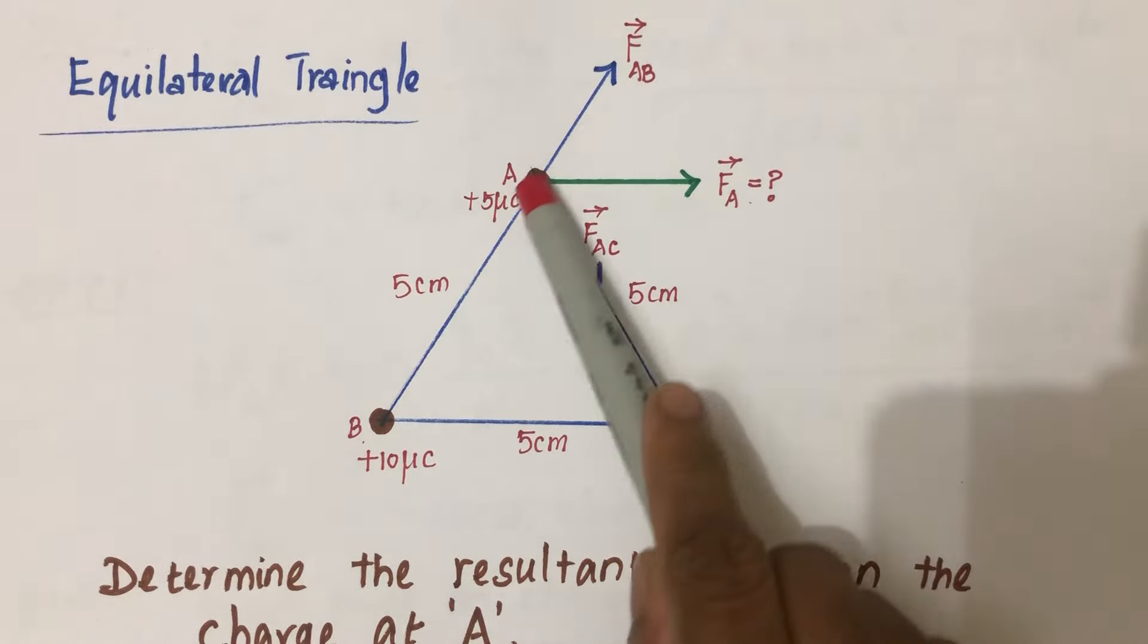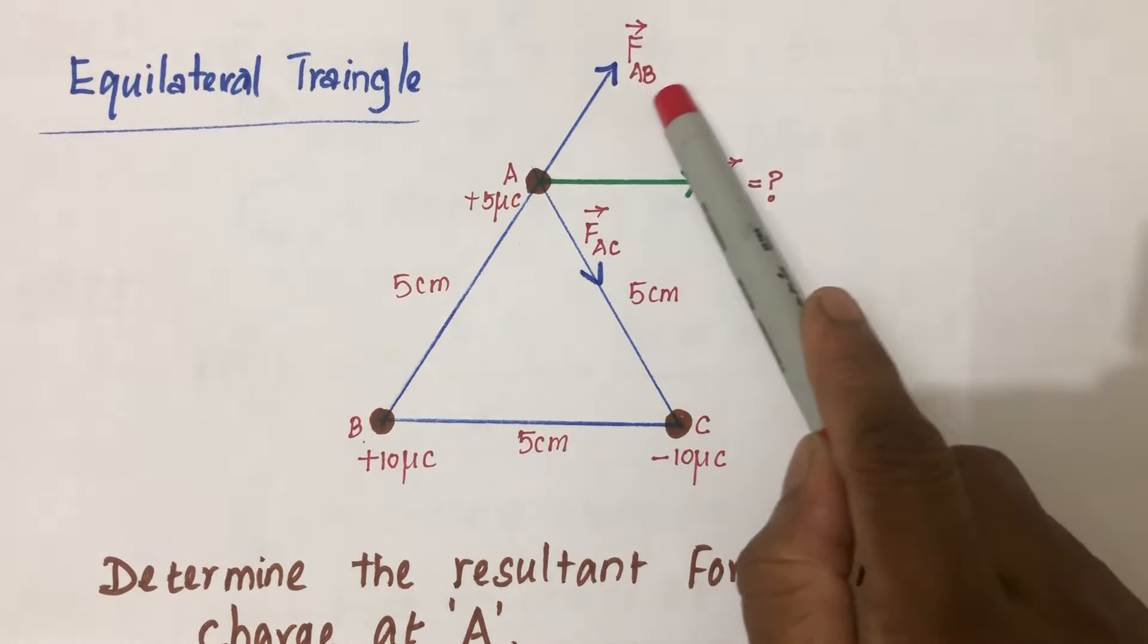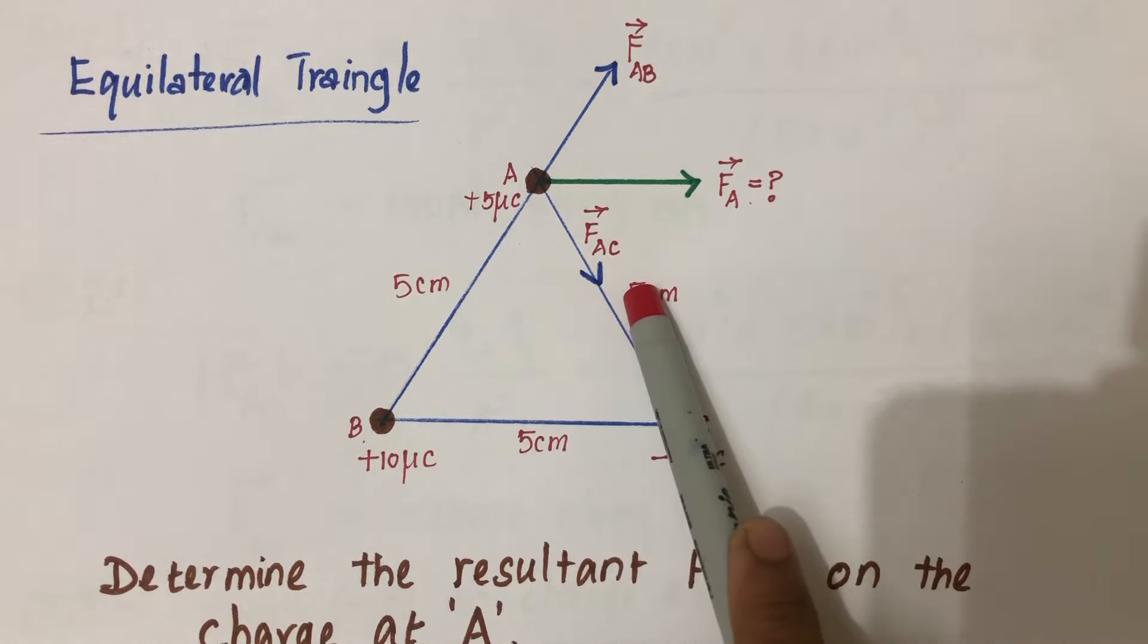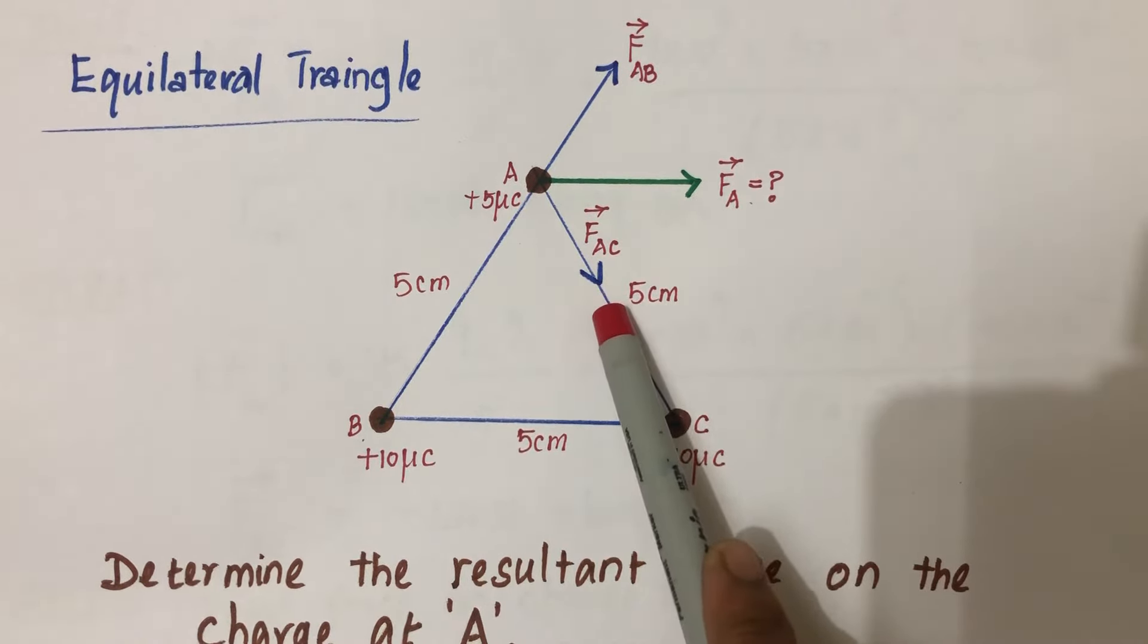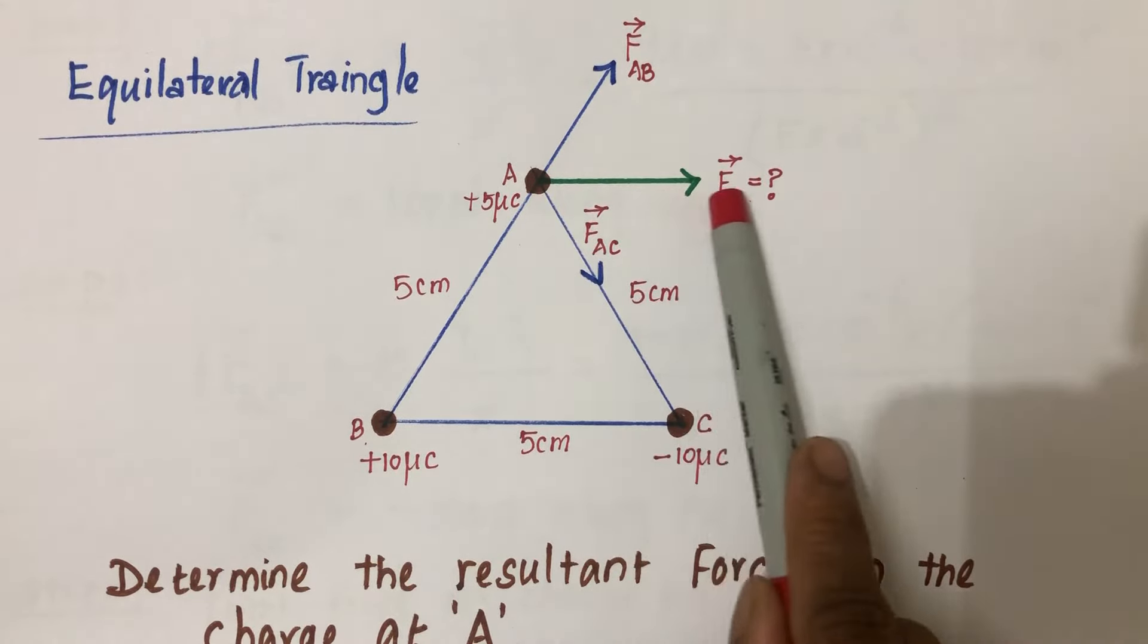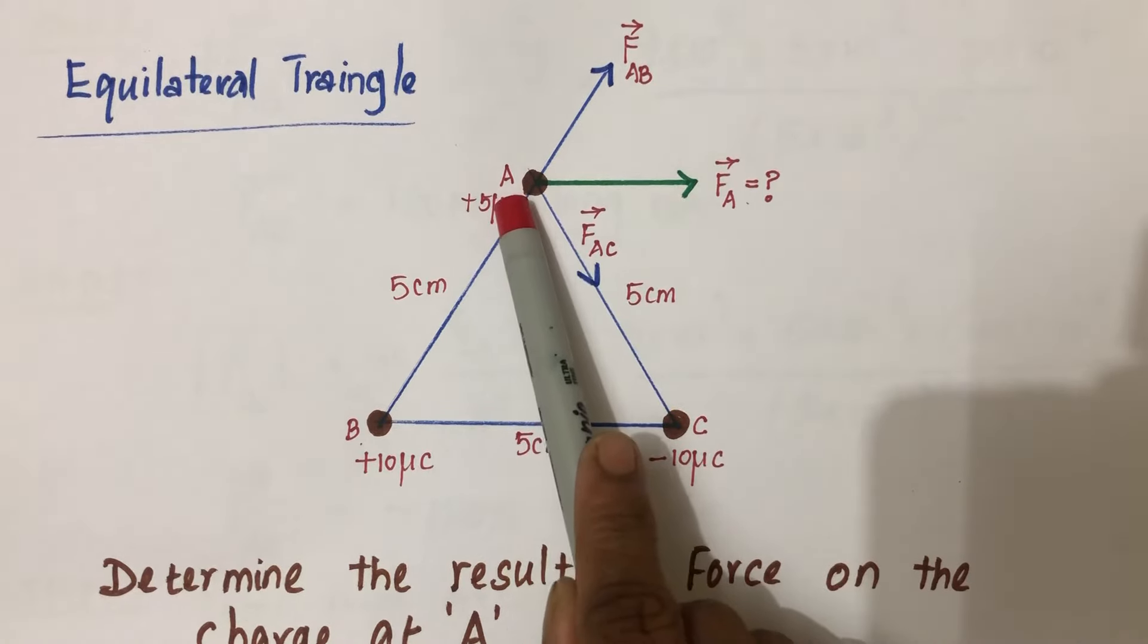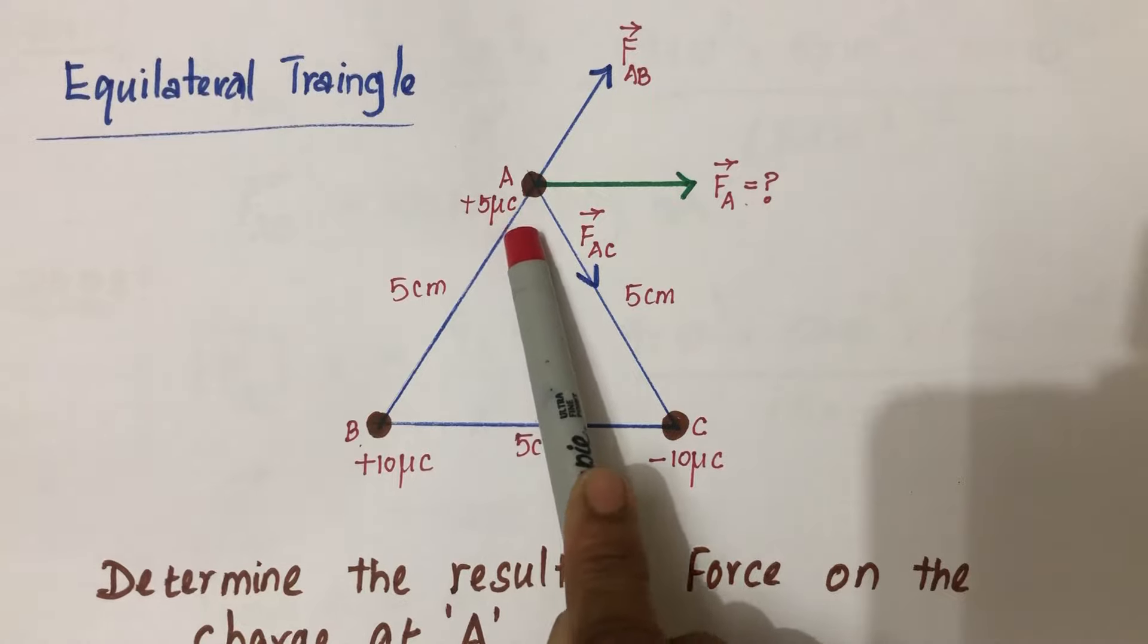First, we have to find out the magnitude of FAB, then the magnitude of FAC, and then we're going to use the parallelogram law of addition to find out the total force—the resultant force acting at charge plus 5 microcoulombs at A.